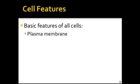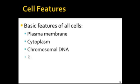All cells have these basic features: a plasma membrane, which surrounds the cell; the cytoplasm, which is what's inside the cell; chromosomal DNA; and ribosomes, which are structures that make proteins. So we'll examine each of these elements briefly.